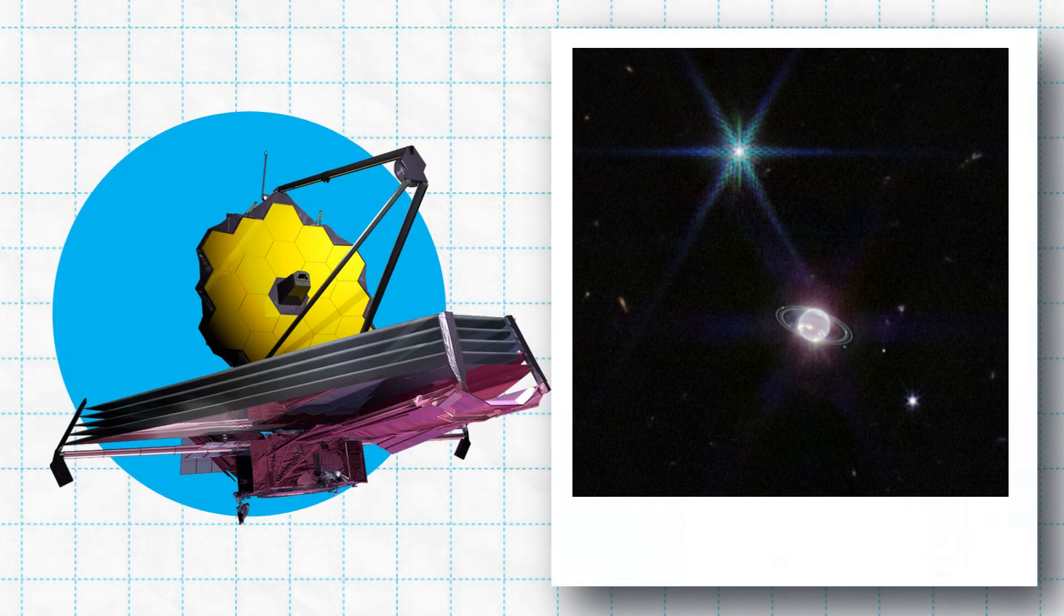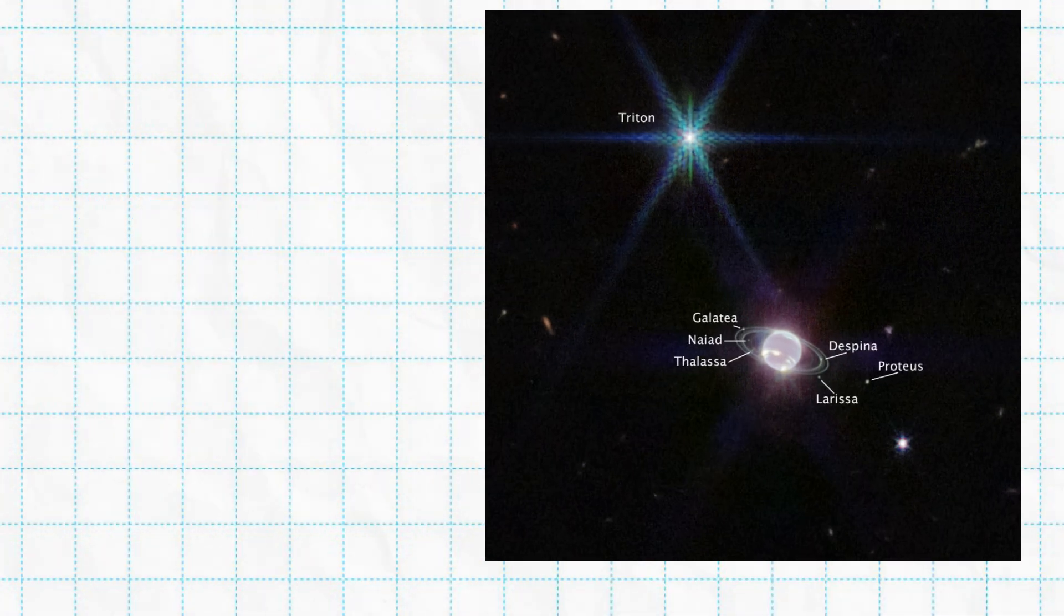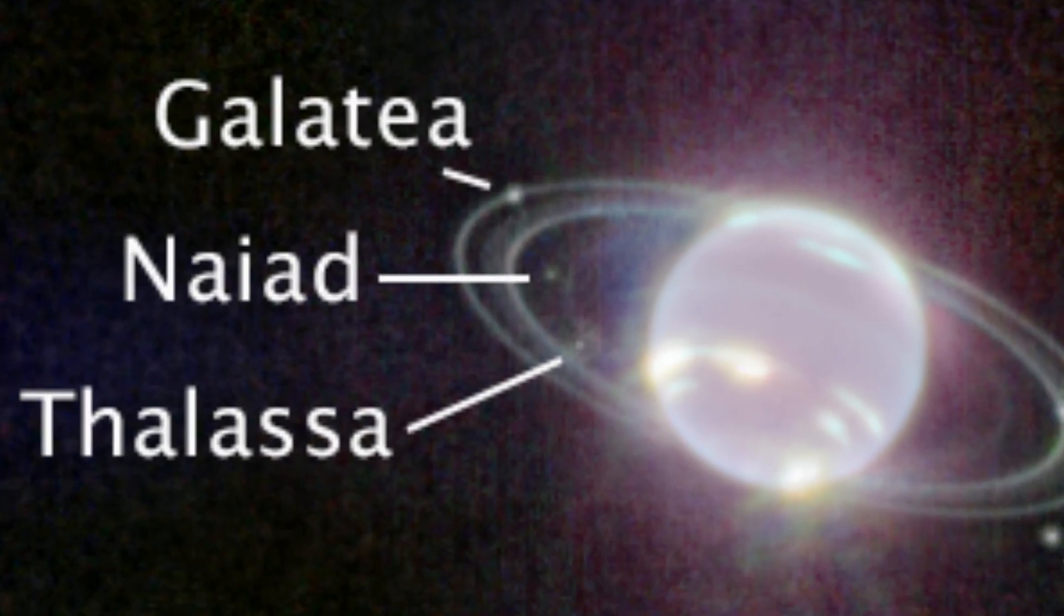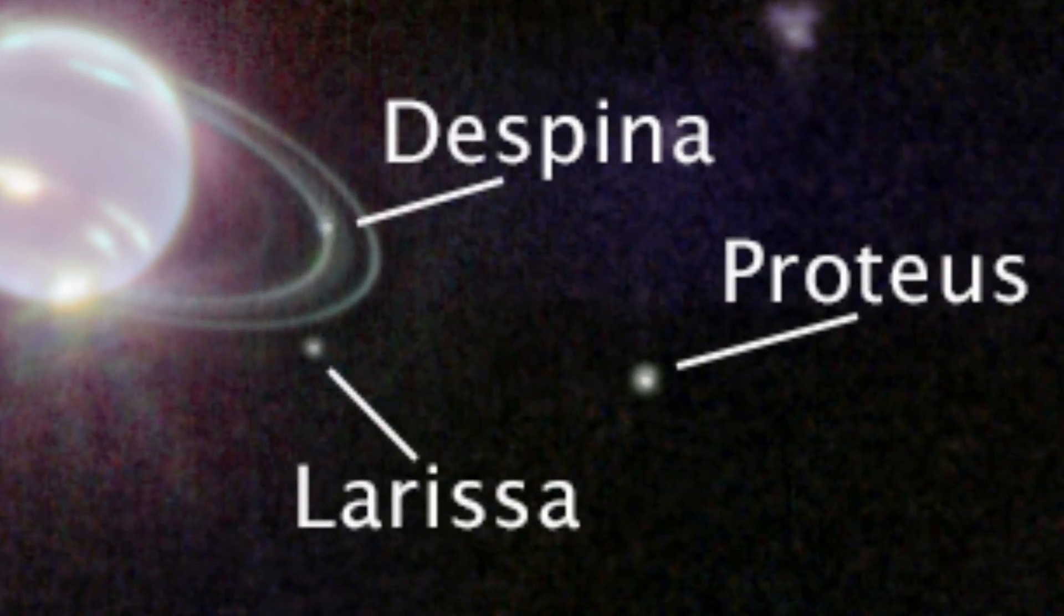The most recent image of Neptune and its moons, captured by the James Webb Space Telescope, shows seven of Neptune's 14 known moons, Galatea, Naiad, Thalassa, Despina, Proteus, Larissa, and Triton.